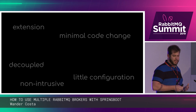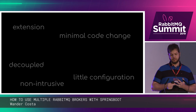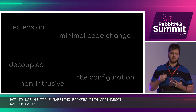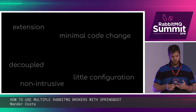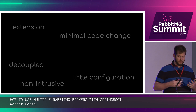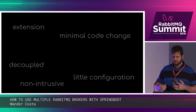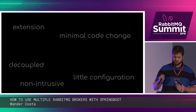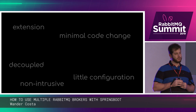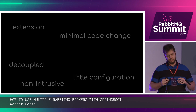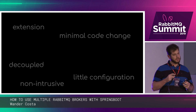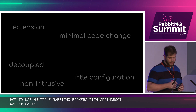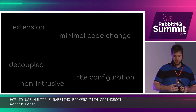We got to make it an extension of Spring AMQP. We got to have minimal code change, so whatever was running with Spring and RabbitMQ before wouldn't crash and wouldn't require too much change. Nothing related to our internal systems. It requires very little configuration to start with - just a couple more properties - and of course setting up the container factory and the context. And it's non-intrusive.